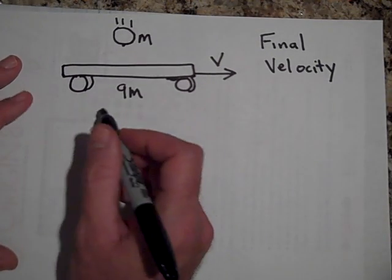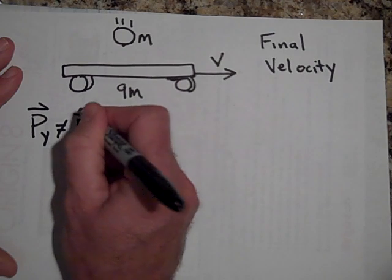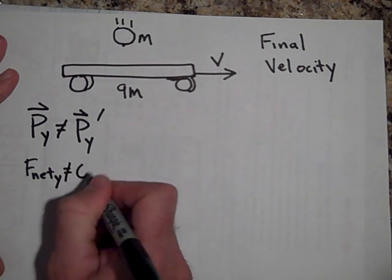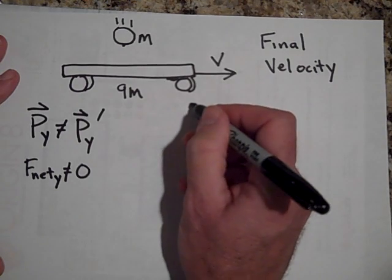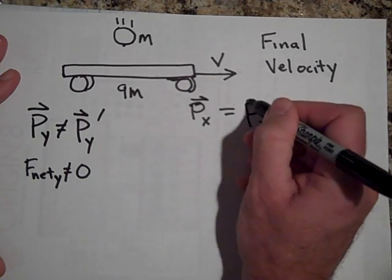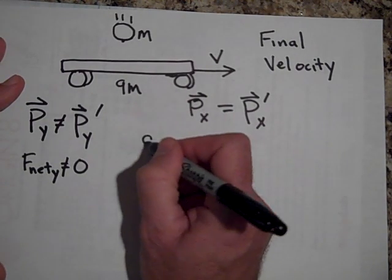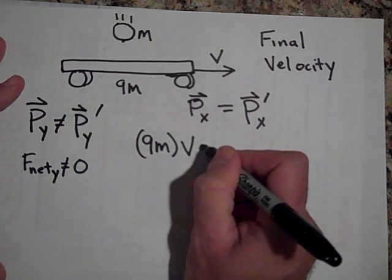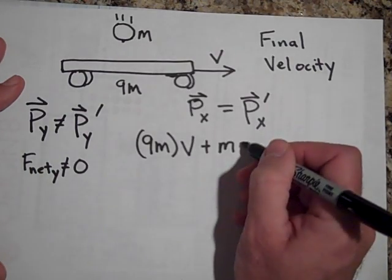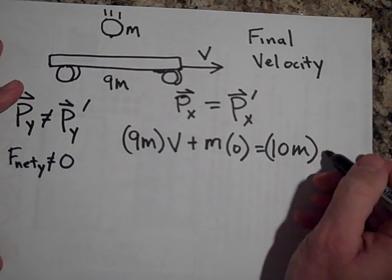Okay, we're back. This is a case where the momentum in the Y direction afterwards will not equal the momentum in the Y direction before, because F net in the Y direction is not zero. But in the X direction, momentum is conserved: p in the X direction equals p prime in the X direction. So we can say 9m times v, plus none of the sand bag's momentum is in the X direction, equals 10m times v prime, since they stick together.